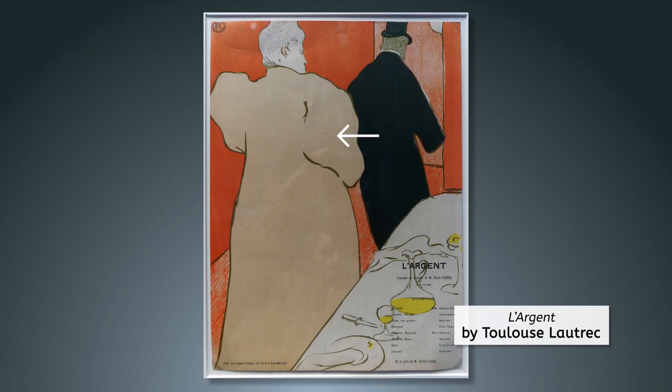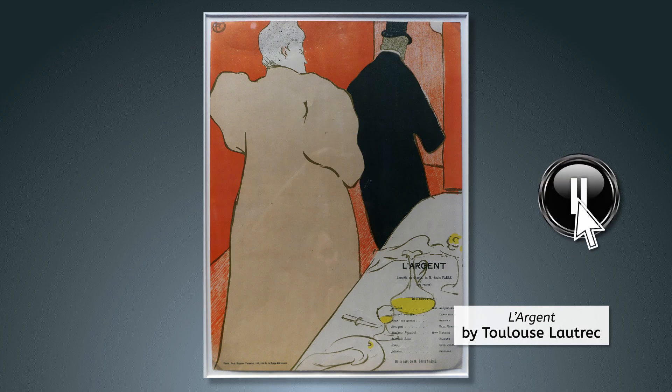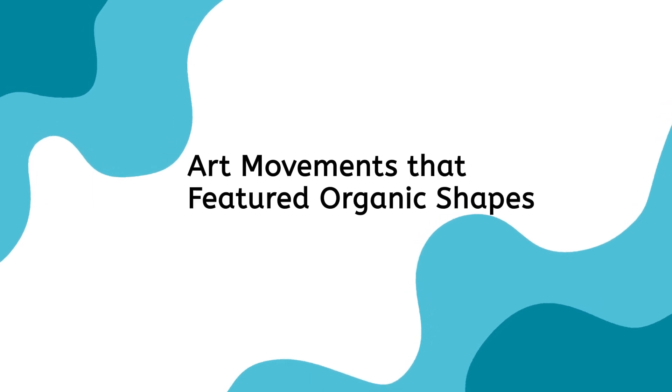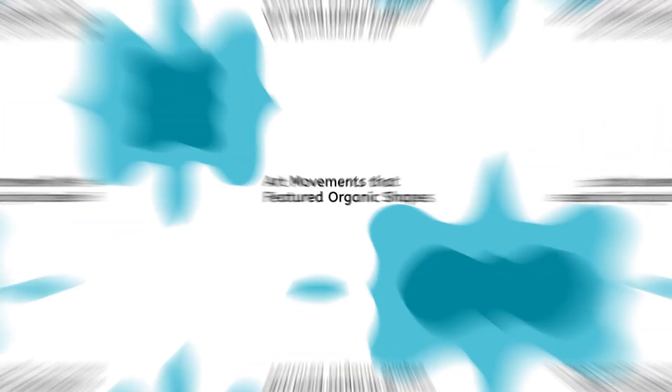In this image, we see strong organic shapes in the coat forms from the back of the figures. Where else are organic shapes featured? Throughout history, organic shape has been a popular element in art, appearing in different movements, styles, and mediums.